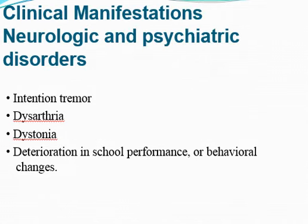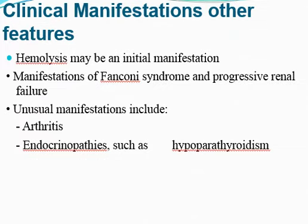Regarding neurological and psychiatric disorders, there are intention tremors, dysarthria, dystonia, and deterioration in school performance or behavioral changes. There is hemolysis which may manifest as pancytopenia/anemia. In initial cases, pallor along with jaundice is seen. Unusual manifestations include arthritis and endocrinopathies like hypoparathyroidism.